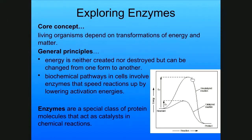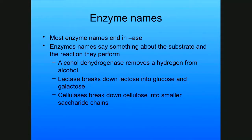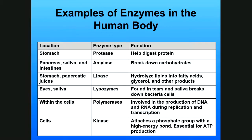Enzymes' shape is very important. By the shape that they have, they give you the ability to bring reactants closer together, expose sites, and put bends on things — that's how they work. You can usually recognize when something is an enzyme because its name ends in -ase. Enzyme names usually tell you something about the substrate or the reaction they perform. For example, alcohol dehydrogenase removes hydrogen from alcohol; lactase breaks down lactose into glucose and galactose; cellulases break down cellulose into smaller saccharide chains.